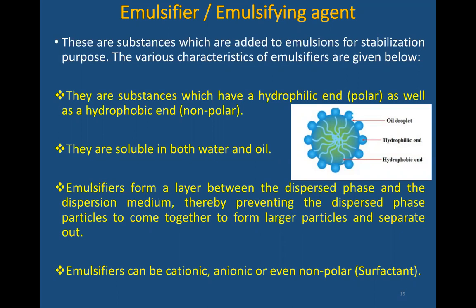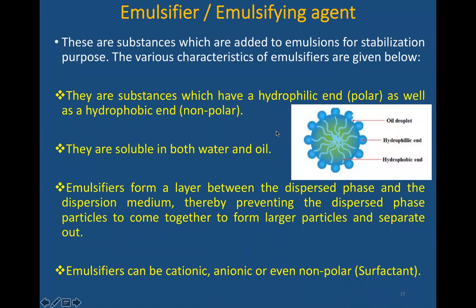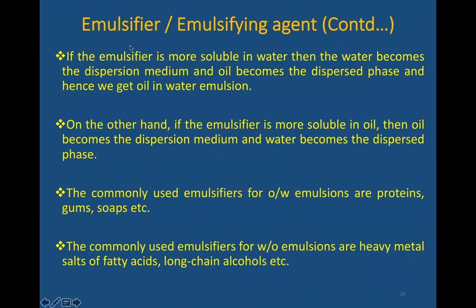Emulsifier can be cationic, anionic, non-ionic, and zwitterionic. Cationic means the head group is positive; anionic means the head group is negative; non-ionic means there is no charge; and zwitterionic means both positive and negative parts are present. These are the four types of emulsifiers. If the emulsifier is more soluble in water then water becomes the dispersion medium and oil becomes the dispersed phase, giving oil in water emulsion. On the other hand, if the emulsifier is more soluble in oil, oil becomes the dispersion medium and water becomes the dispersed phase.